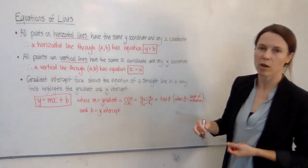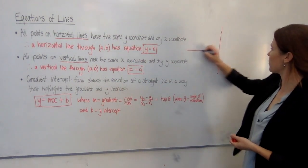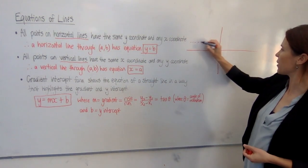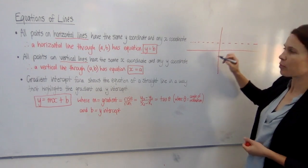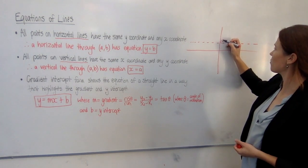Horizontal lines all have the same y-coordinate. So if we draw one up here and say we have a line that goes through any point on here, let's call this 2.